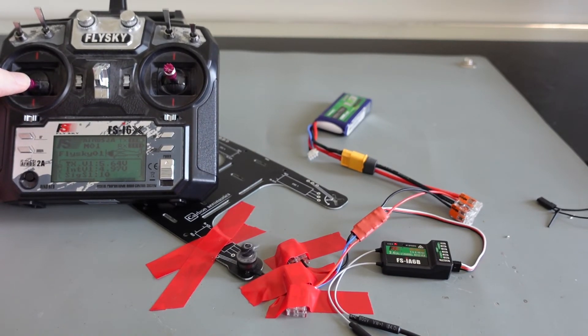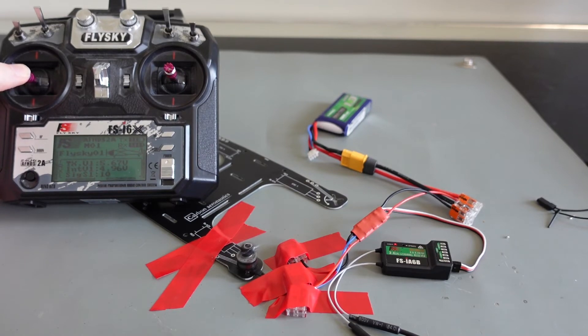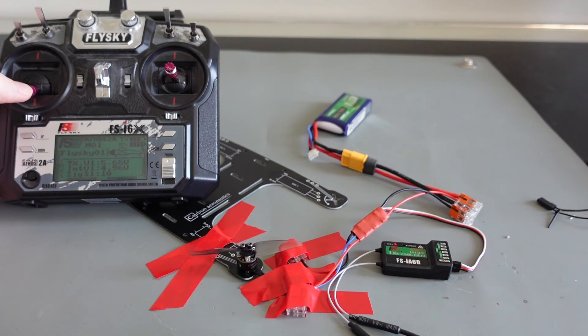Increase the throttle stick to start and control the motors. When you get a linear behavior from the lowest to the highest position of the stick, the calibration was successful.